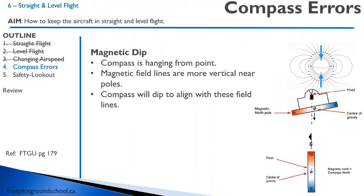Let's discuss some compass errors. The compass is hanging from a point, and the Earth's magnetic flux lines are not horizontal — at the poles, they are more vertical. The way the compass is constructed, it will dip to align with these magnetic field lines.